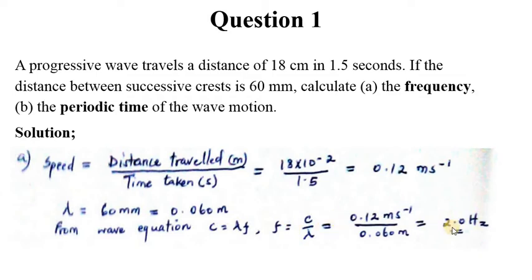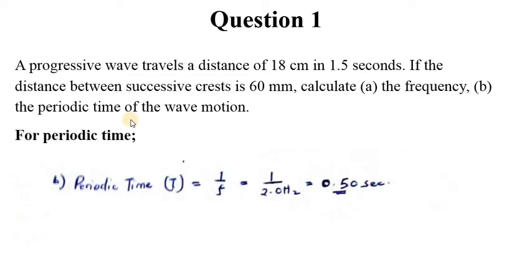So this result is very important in finding now the periodic time. The periodic time is simply the inverse of frequency. So we will take 1 divided by 2.0 which is the value for frequency we found for the wave, and we get 0.50 seconds as the value for periodic time.